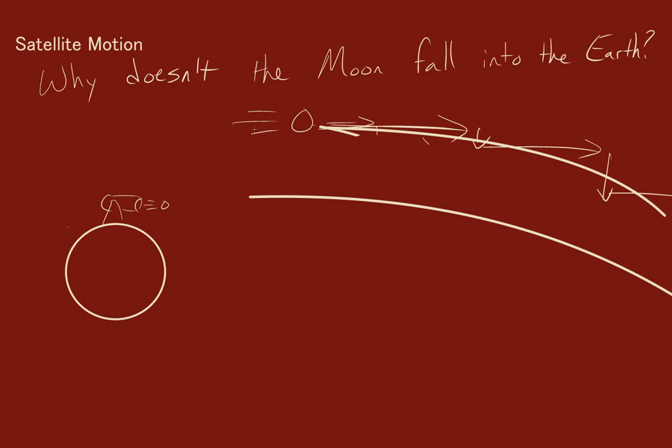So the moon doesn't fall into the earth because of the motion of the earth and the shape of the earth, and on top of that, the moon is going fast enough. So when it comes to satellite motion, really what matters here is the speed and how far away from the earth. Let's talk about that real quick.